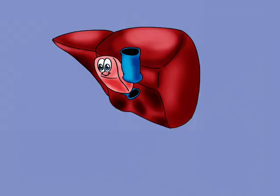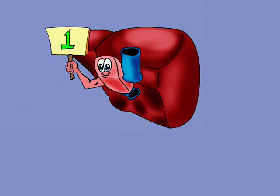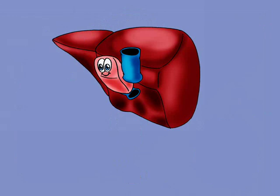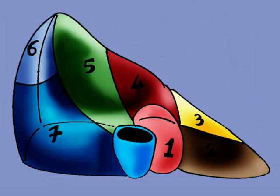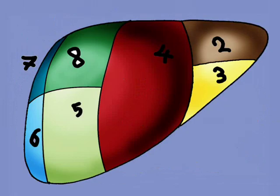But the question is: where is the first segment? Here it is — it is the caudate lobe. What a cunning lobe; it is hidden in the back of the liver. This is a rotating liver shown from all its views.